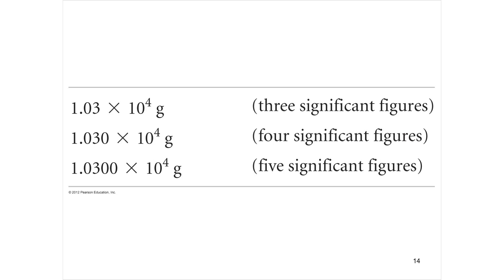Finally, the easy rule: if you have anything expressed in scientific notation, that is the number of significant digits you have. So if you have 1.03 times 10 to the whatever, there are three significant figures. If you have 1.0300, you have five significant digits. Whatever you see is the number of significant digits when it's written in scientific notation. Also, if you want to make sure someone knows there are four significant digits, write it in scientific notation and there's no doubt — everybody knows exactly what it is. All right, this is a hard lesson. We'll work on it.